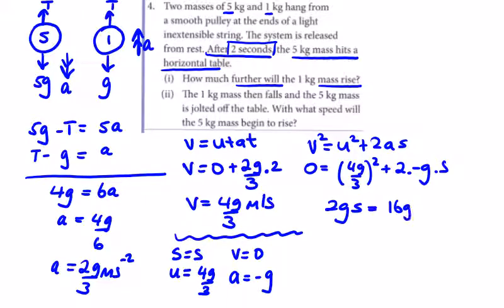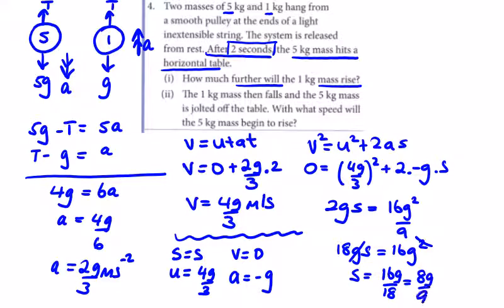Simplifying, we get s = 16g/18 = 8g/9 meters.